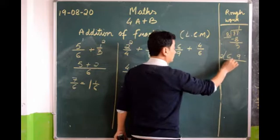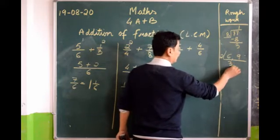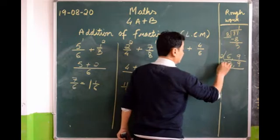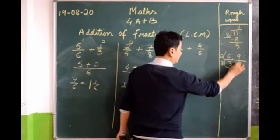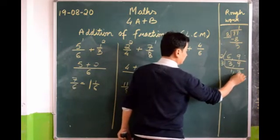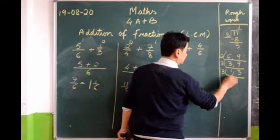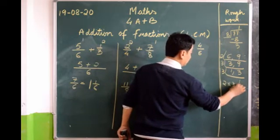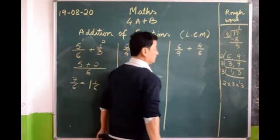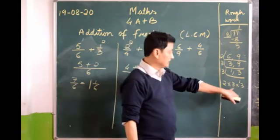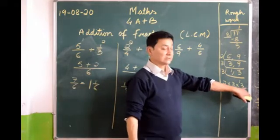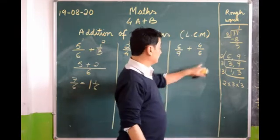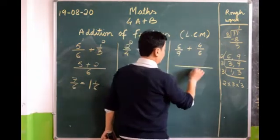2 goes into 6 three times, but will 2 go into 9? No — bring down 9. 3 ones are 3; will 3 go into 9? Yes — 3 threes are 9, and 3 ones are 3. So the prime factors are 2 times 3 times 3. Let's multiply: 2 threes are 6, and 6 threes are 18. So the LCM of 9 and 6 is 18.